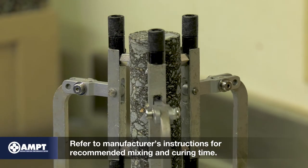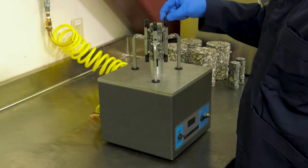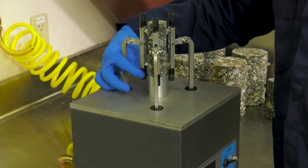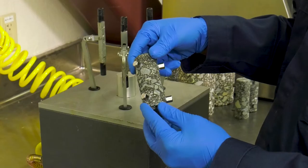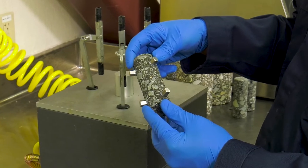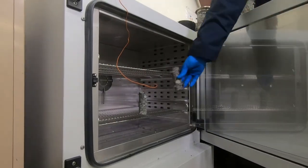Refer to the manufacturer's instructions for recommended mixing and curing time. Once the appropriate time has elapsed, unseat the gauge points from the setting arms. Remove the test specimen from the fixing jig. Visually inspect for proper stud attachment and then place it in an external environmental chamber for temperature conditioning.